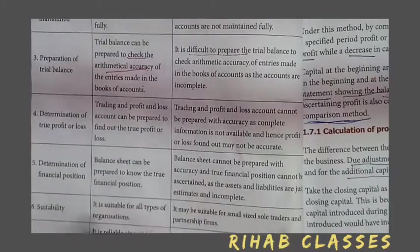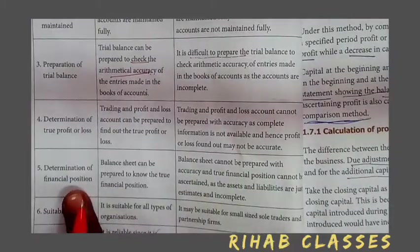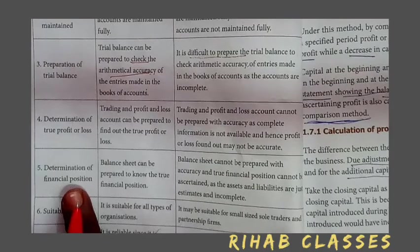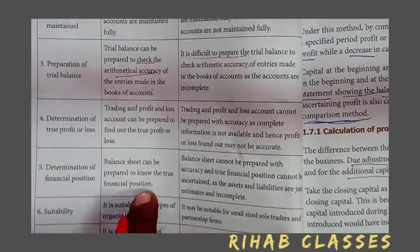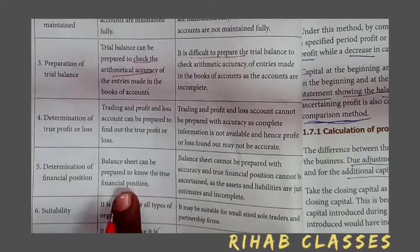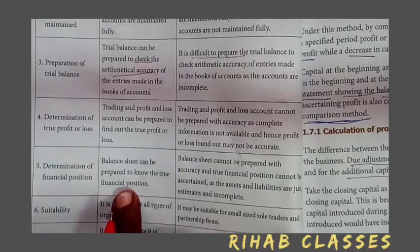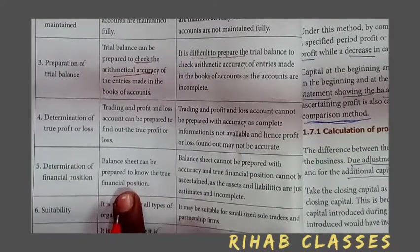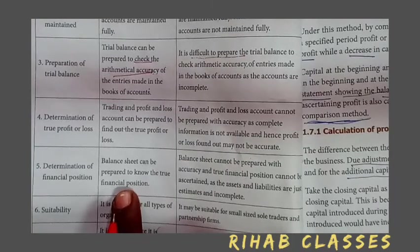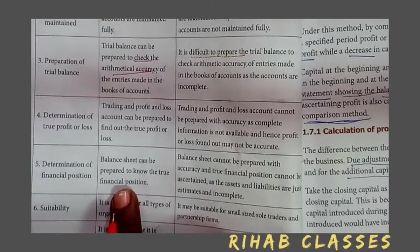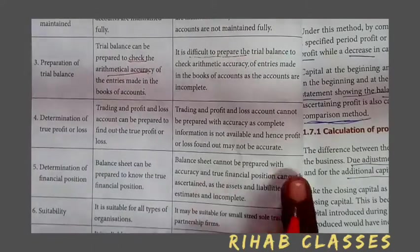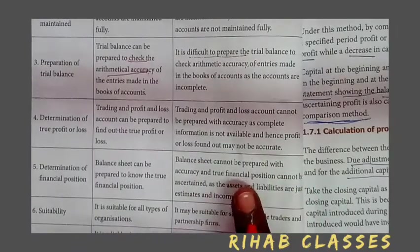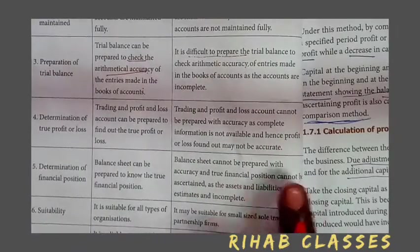The next basis is determination of financial position. In the double entry system, the financial position is presented with full information. However, in the single entry system, the balance sheet cannot be prepared with accuracy and the true financial position cannot be ascertained.